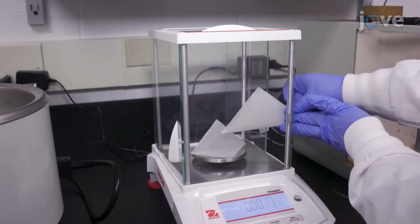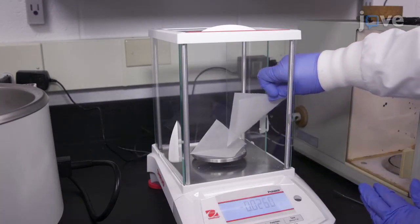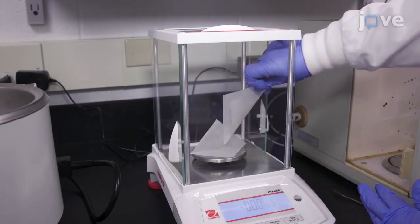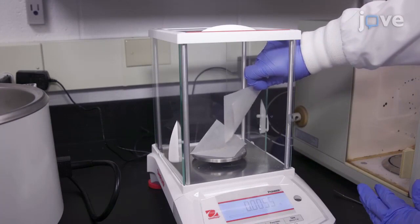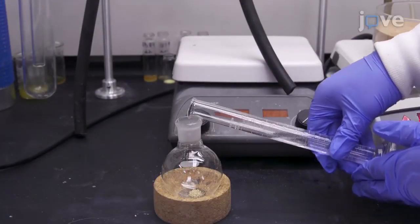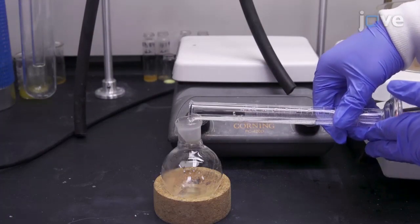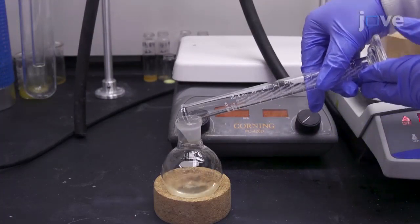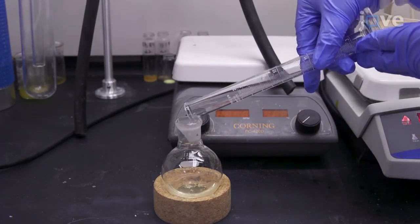To prepare complex 4, add 0.121 grams of 2,6-bis-N-isopropyl-N'-methylene-imidazole-2-thione-pyridine and 0.0851 grams of cobalt(II) chloride hexahydrate to a 100 milliliter round bottom flask containing 15 milliliters of acetonitrile.